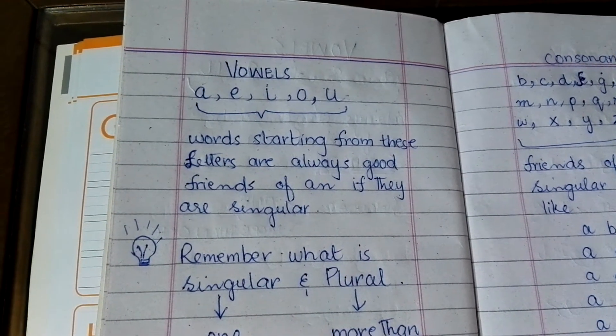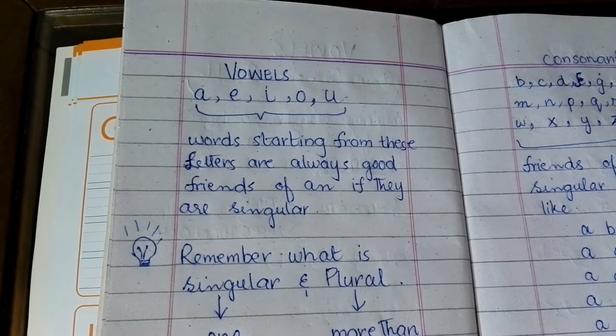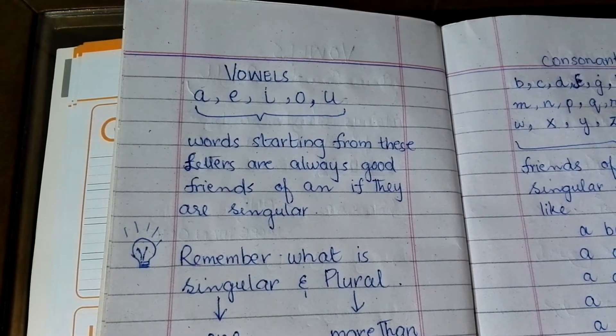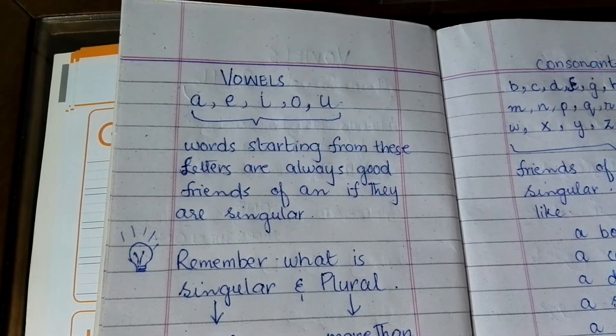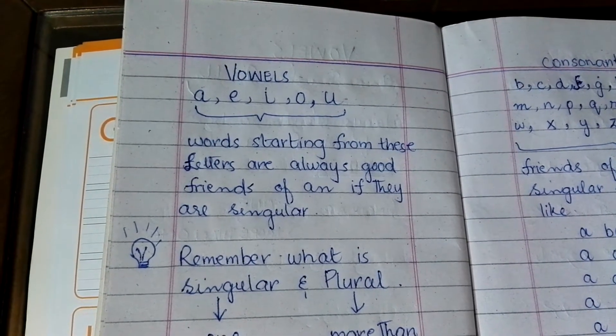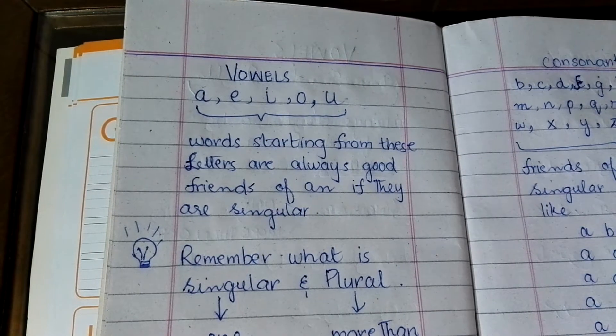Vowels wo letters hotte hai jo English mein A, E, I, O, U hain. Yeh wale jo letters hain, yeh vowels hotte hai.